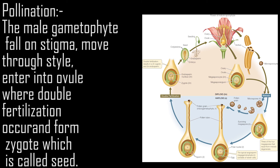Pollination. The male gametophyte falls on the stigma, moves through the style, and enters into the ovule, where double fertilization occurs and forms a zygote, which is called a seed.